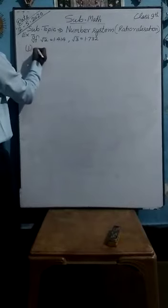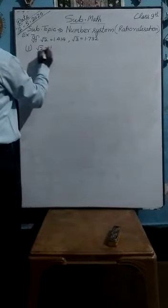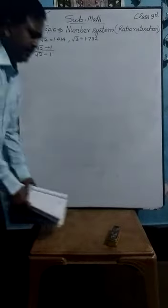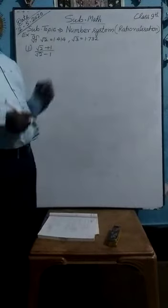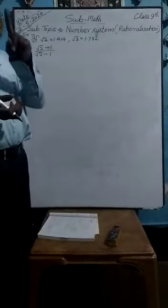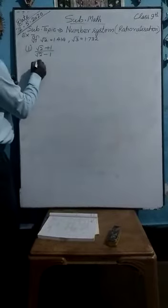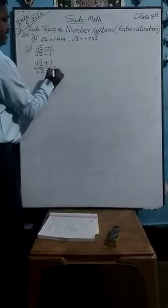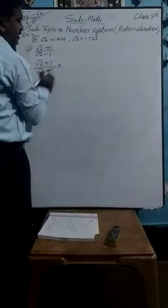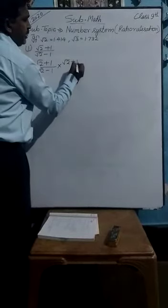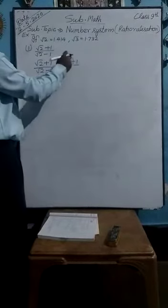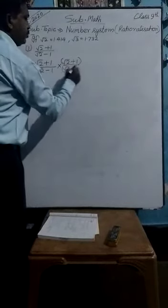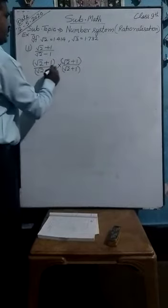In this type of question, when you have to put the value, first rationalize it by method. Under root 2 plus 1 upon under root 2 minus 1 — multiply here according to its denominator, under root 2 plus 1, different symbol: minus becomes plus. And under root 2 plus 1, close inside the bracket because of two terms.